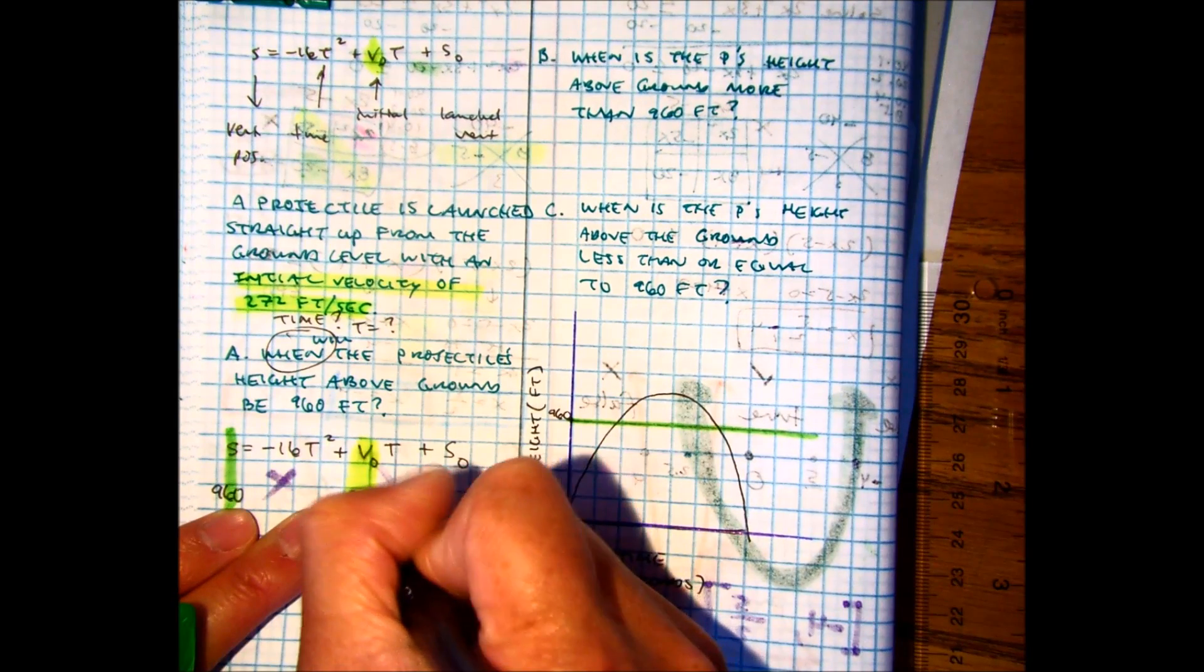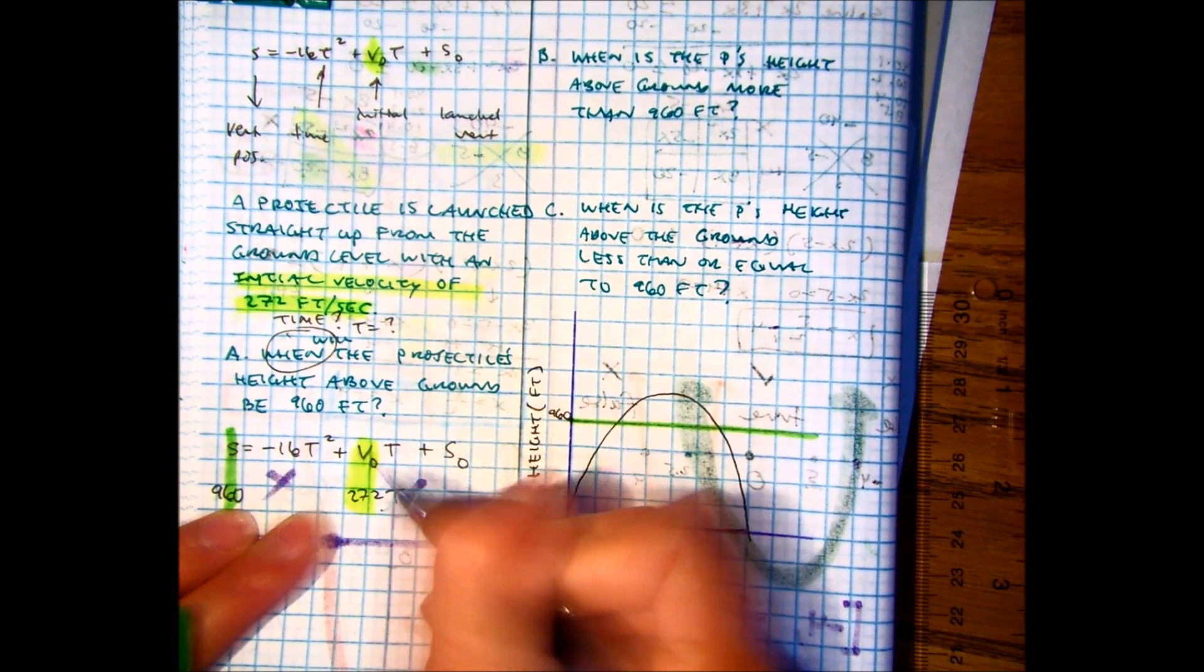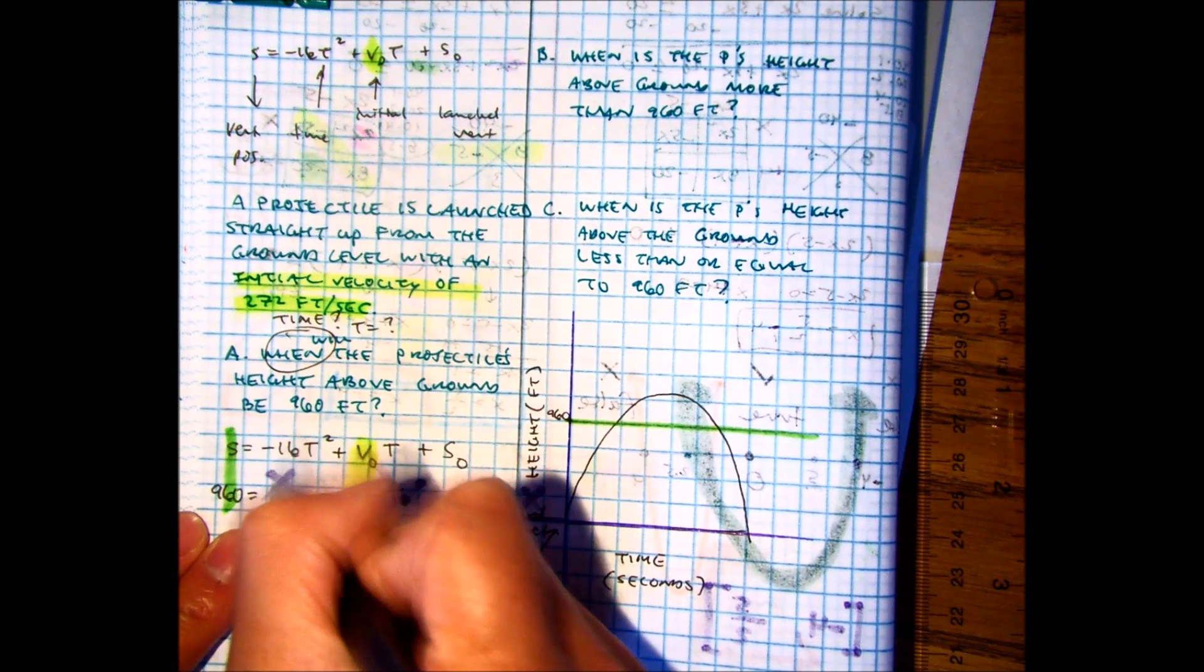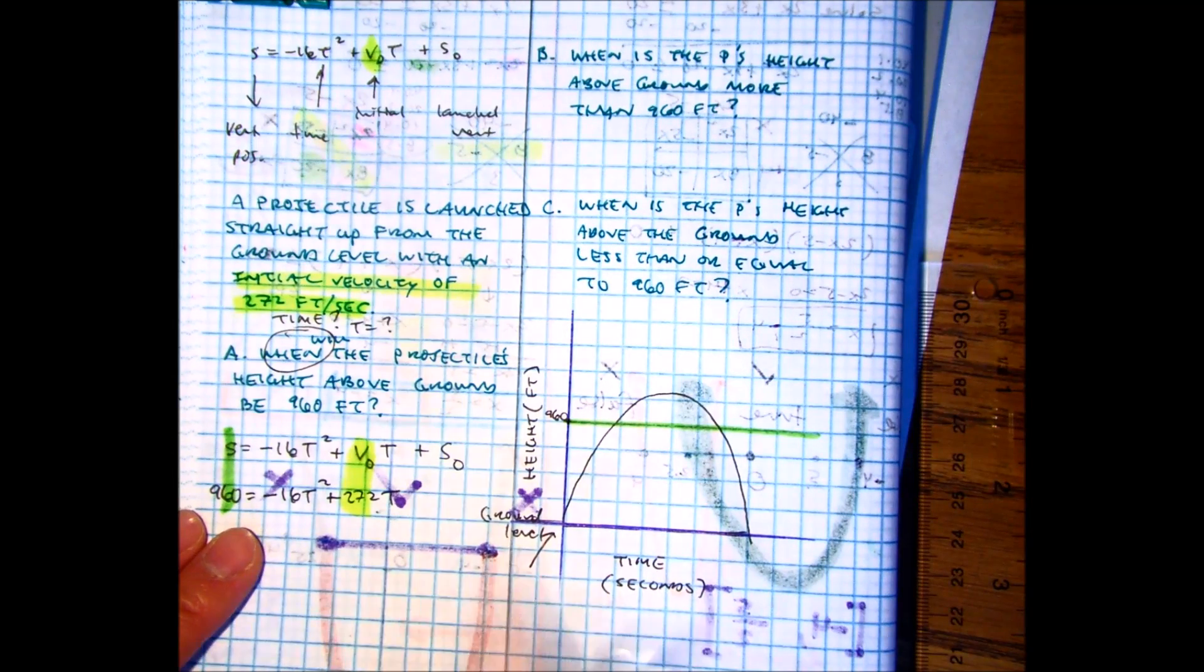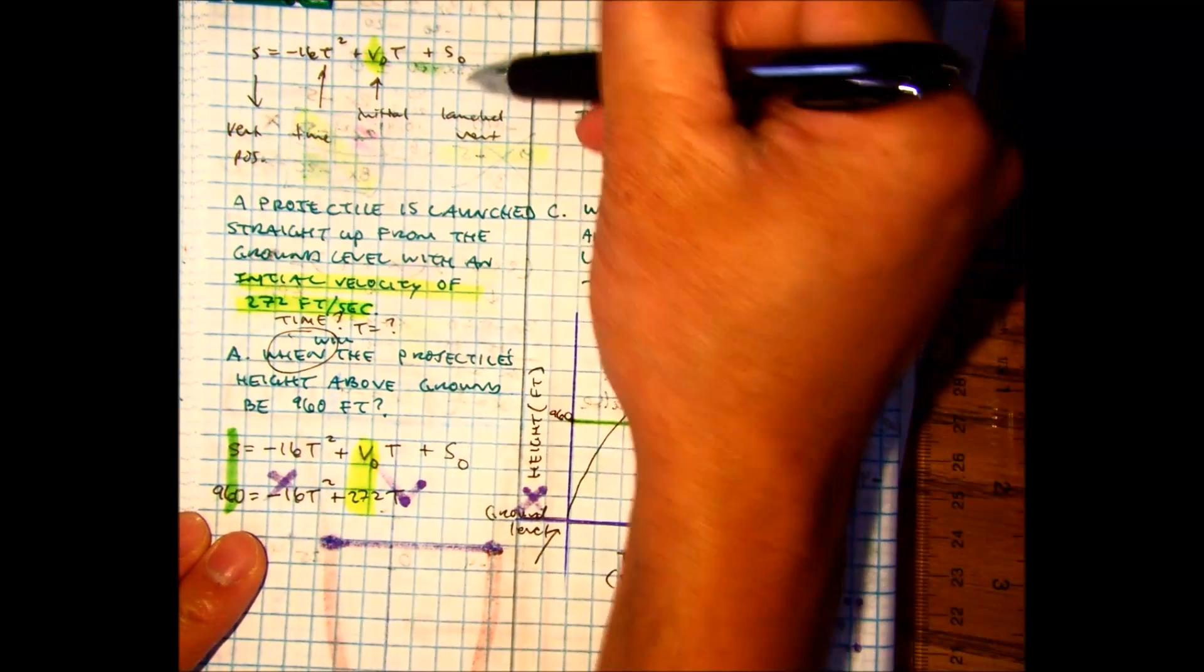Initial velocity, so it's 272T. This part of the equation just kind of falls down. Negative 16T squared plus 272T. And then S zero is the vertically launched.